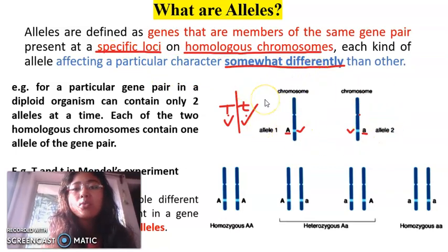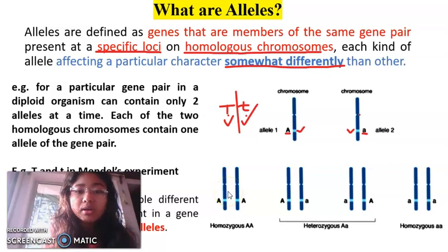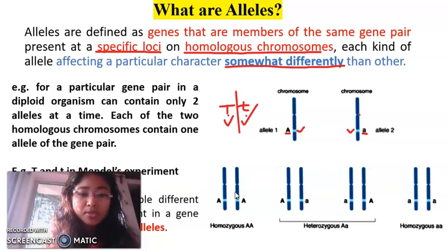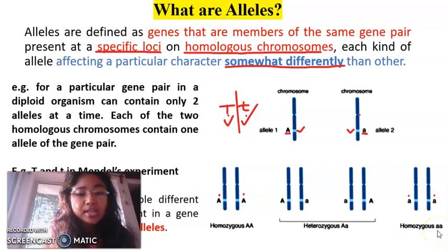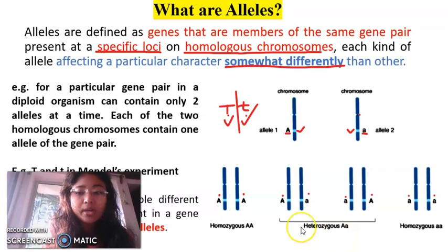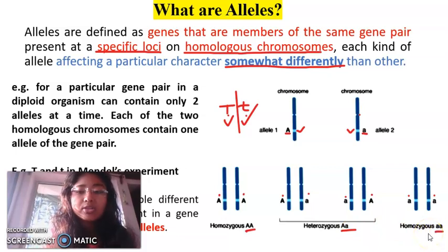In a diploid organism, only two alleles can be present at a time since only two homologous chromosomes exist for each pair. The genotypes can be homozygous capital A capital A, homozygous small a small a, or heterozygous capital A small a.